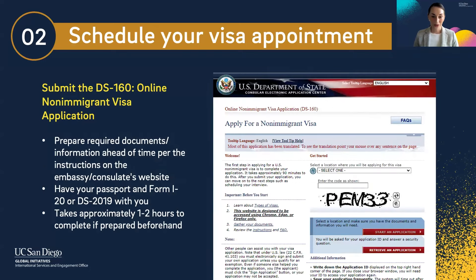Look at the website for the U.S. embassy or consulate where you plan to apply and read through their instructions on how to apply for a non-immigrant visa. Use those instructions to prepare the required documents and information you'll be asked to submit as part of the DS-160 application. You will also want to have your passport and your Form I-20 or DS-2019 in front of you when filling out the DS-160. If you have prepared beforehand and read through the instructions, filling out and submitting the DS-160 should take about one to two hours.